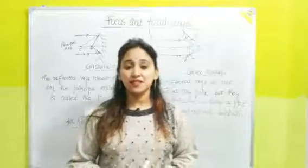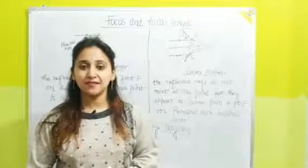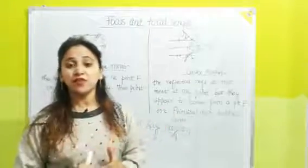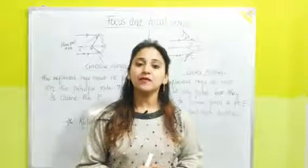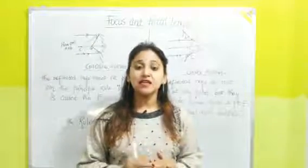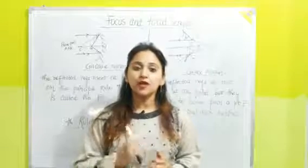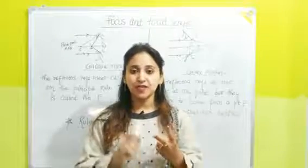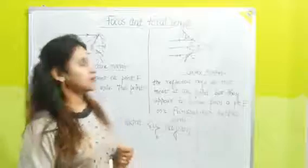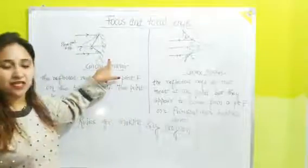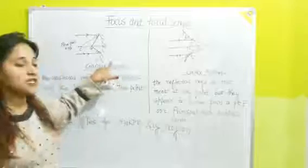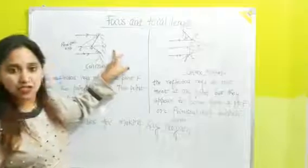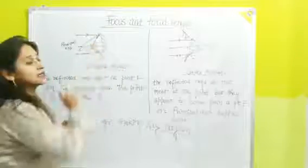Today we will start the next topic of this chapter: focus and focal length. Before understanding focus and focal length, let's revise spherical mirrors. Spherical mirrors are mirrors that curve inward, just like a spoon. These spherical mirrors are of two types: concave mirror and convex mirror. In a concave mirror, the outer part is silvered/polished and the inner part is the reflecting part.